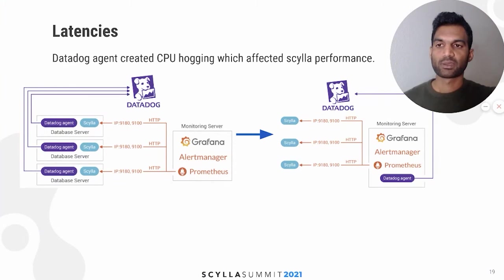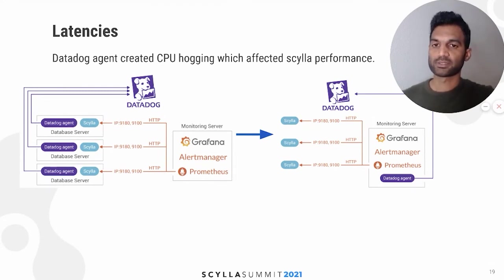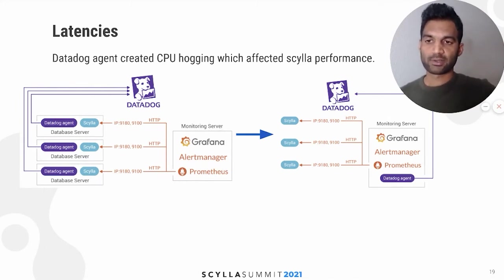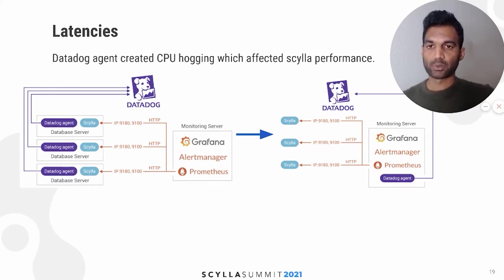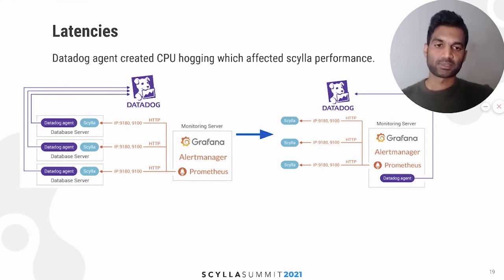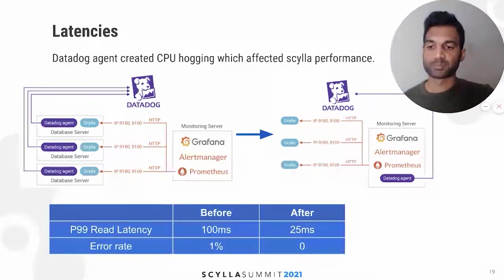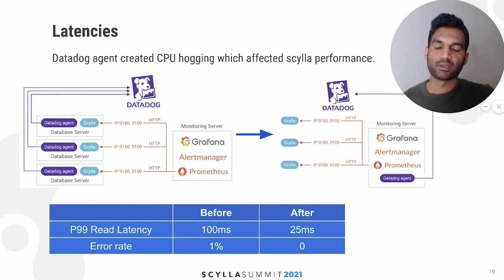A few months after we migrated from Cassandra, we started to see latencies increasing for a subset of requests. Upon troubleshooting, it was found that a Datadog agent process running on shard zero was impacting all requests served from that shard. We removed the agent, which was causing CPU hogging on every ScyllaDB instance, and instead used Prometheus from the ScyllaDB monitoring server to export metrics to Datadog. The results were impressive — read latencies dropped to 25 milliseconds and error rate went to zero.